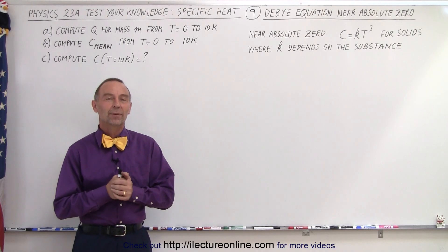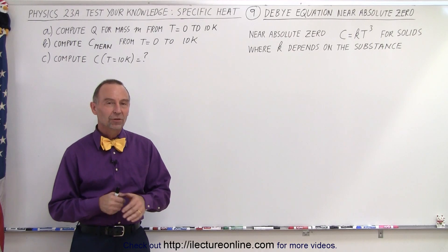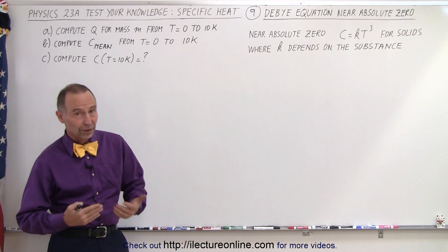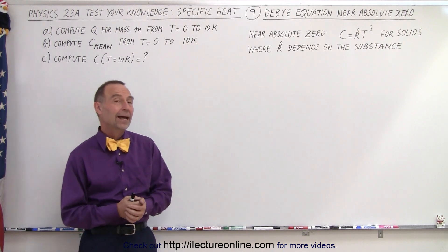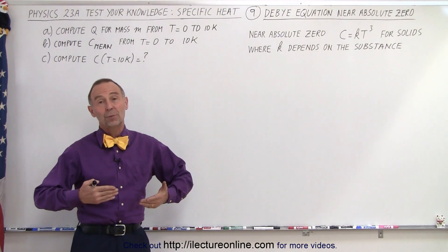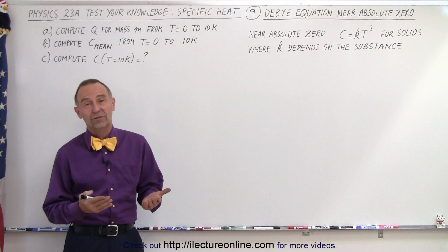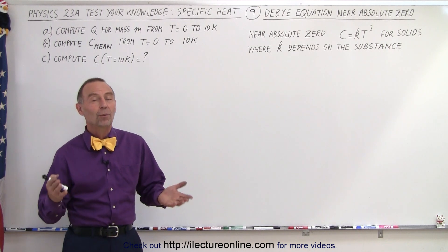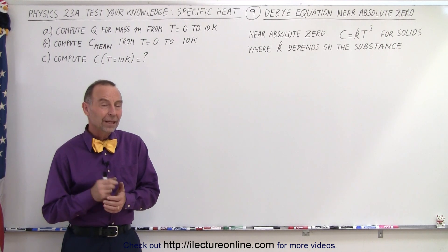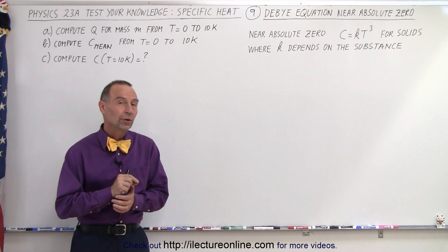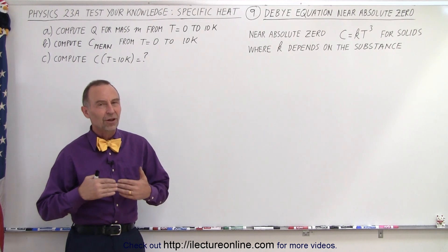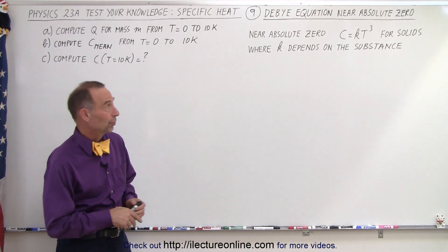Welcome to ElectronLine. The specific heat of substances, such as metals or liquids, is not necessarily constant. Typically we use it as a constant, but it tends to vary somewhat over temperature. But when we get near absolute zero, the specific heat varies a lot as a function of temperature.